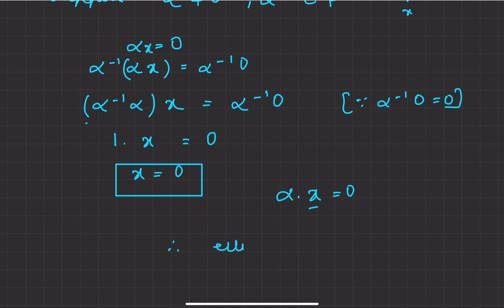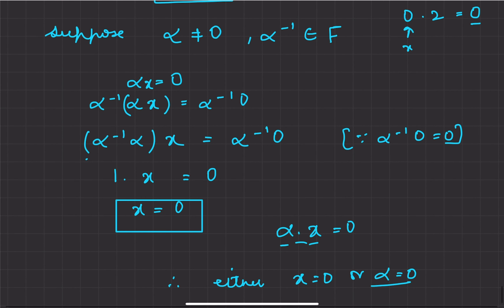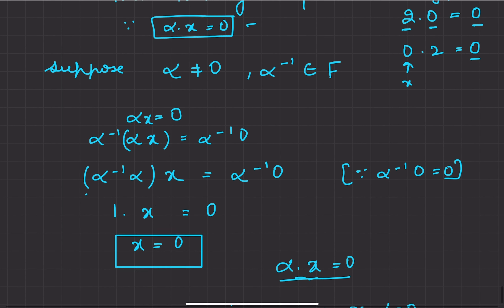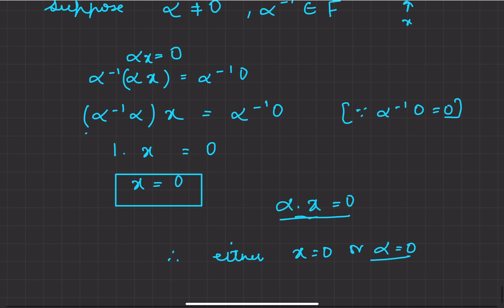So we have proved that either x equals 0 or alpha equals 0, and in both cases we get alpha·x equal to 0. If you still have any queries related to this topic, you can let me know in the comment section, and also do let me know if you liked the video.